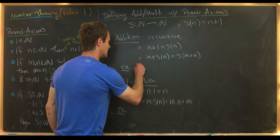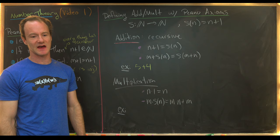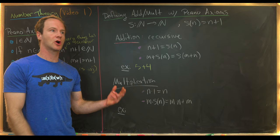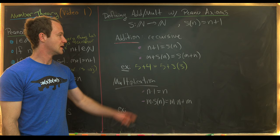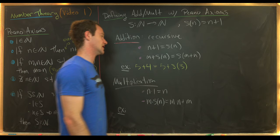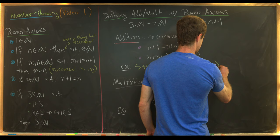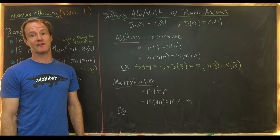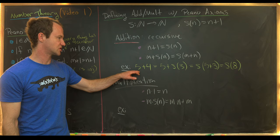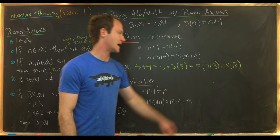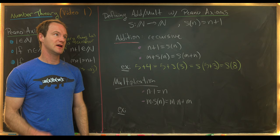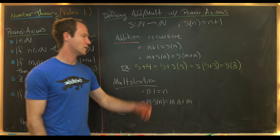Let's see how that recursive definition gives us addition. Say we want to do five plus four — obviously that's nine, but we don't know how to add five and four yet. Recursively, we think of four as the successor of three, and apply our definition: five plus the successor of three equals the successor of five plus three. Since we know five plus three equals eight recursively, the successor of eight is nine. So five plus four equals nine.